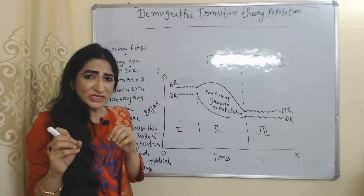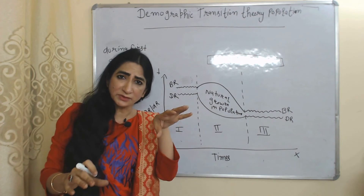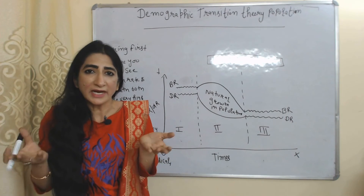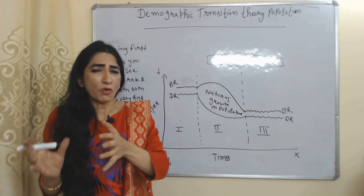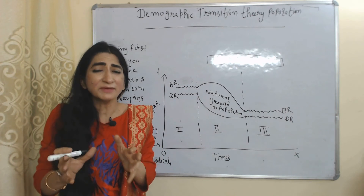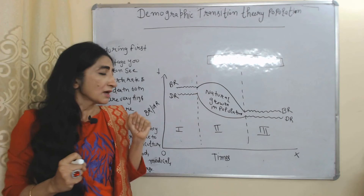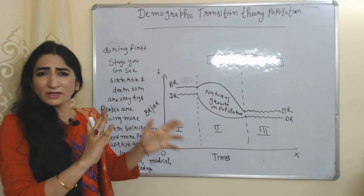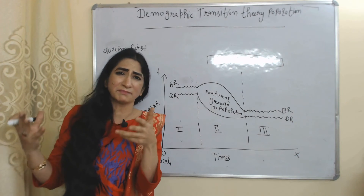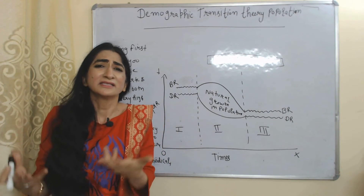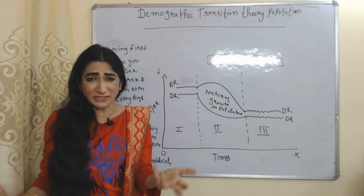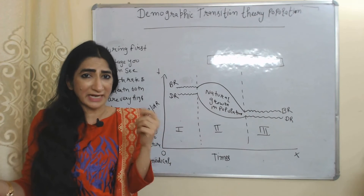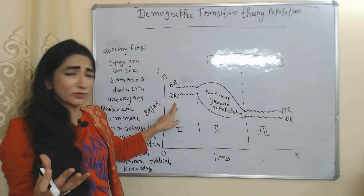Why are both high in stage one? Because initially our economic development is very low and we are mainly dependent on the agriculture sector. That's why people are giving birth to more children because they need more people to work in agriculture. Death rate is also very high initially due to lack of food, nutrition, medical facilities, and knowledge about health care.